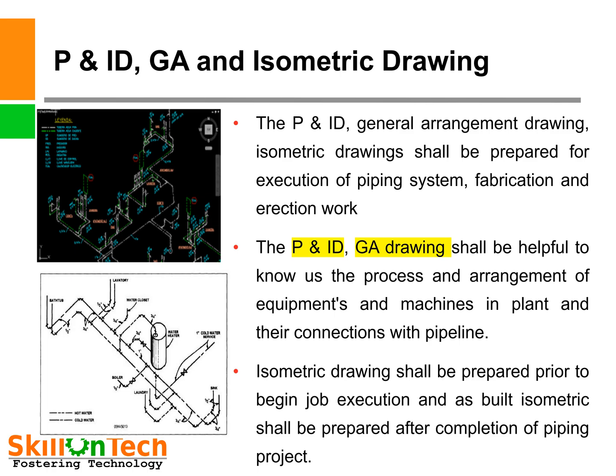P&ID, GA, and isometric drawings. Drawings are very important for carrying out any piping fabrication job. If we are carrying out a pipeline project, we must know about P&ID, GA, and isometric drawings. The P&ID (Process and Instrumentation Diagram), General Arrangement drawings, and isometric drawings shall be prepared for execution of the piping system, fabrication, and erection work. Two pictures are shown in the slide: the top picture is for a general arrangement drawing and the bottom picture is for an isometric drawing of a pipeline. The P&ID and GA drawing are helpful to understand the process and arrangement of equipment and machines in the plant and their connections with pipeline.